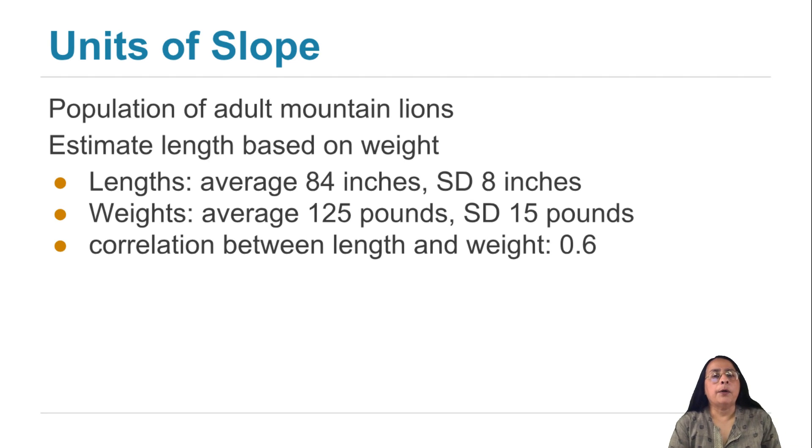We'll do this in the context of an example we've seen before. There's a population of adult mountain lions, and we are trying to estimate the lengths of these animals based on their weights. We know the average and SD of the lengths, the average and SD of the weights, and the correlation between the two variables.